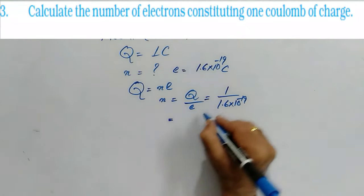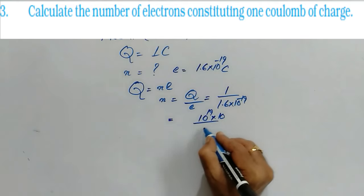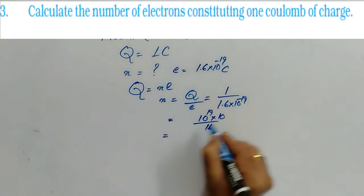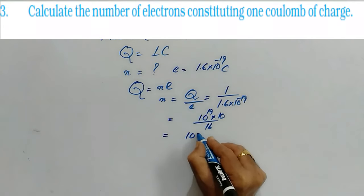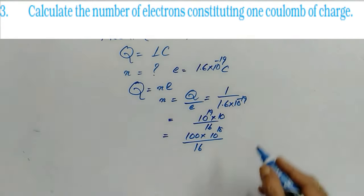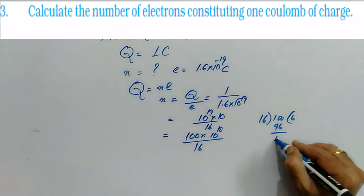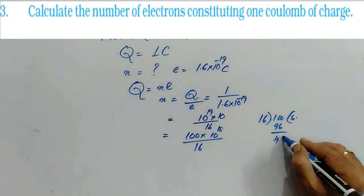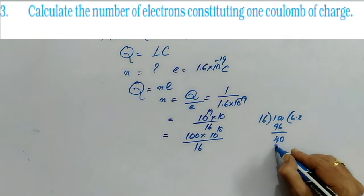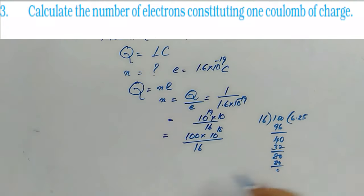I can take this 10 to the power of 19 to the numerator, and for this 1.6, one more 10 I have to write. That should be divided by 16. Conveniently we write 100 into 10 to the power of 18 divided by 16. Now you can divide: 6 are 96, then 4, point, 16 twos are 32, and then 16 fives are 80. Therefore this can be written as 6.25 into 10 to the power of 18.